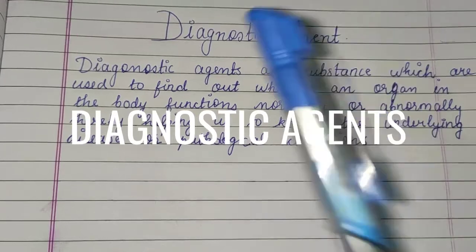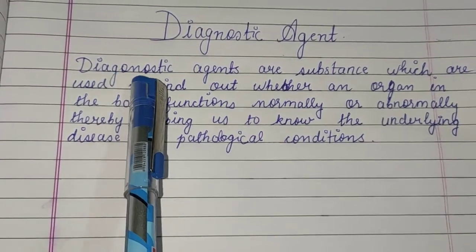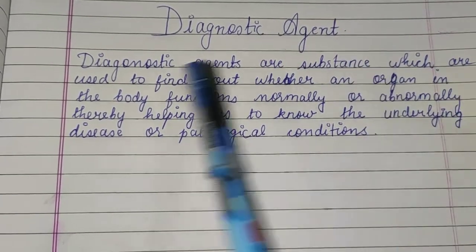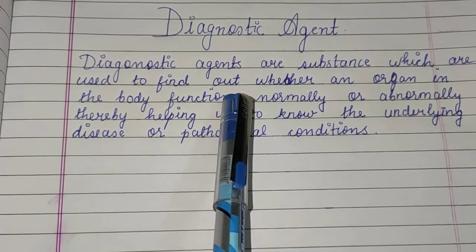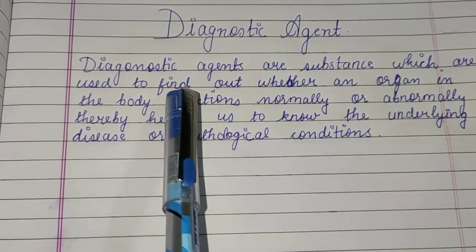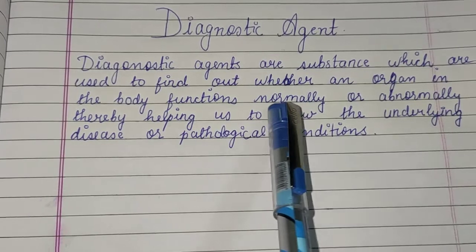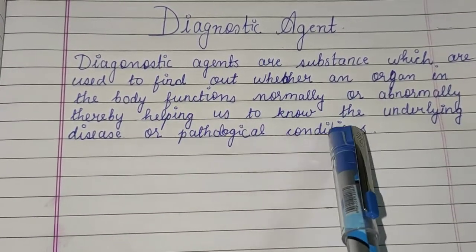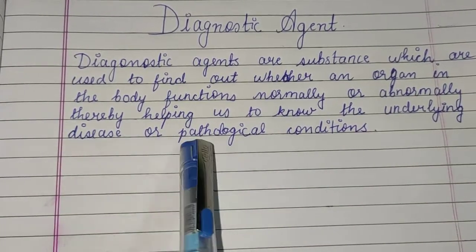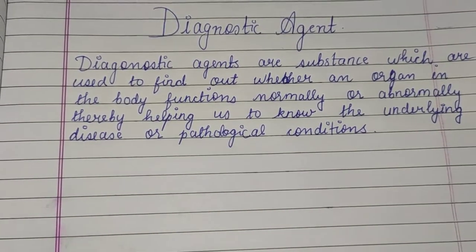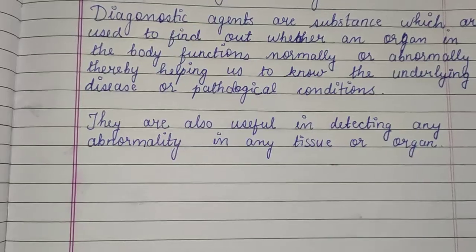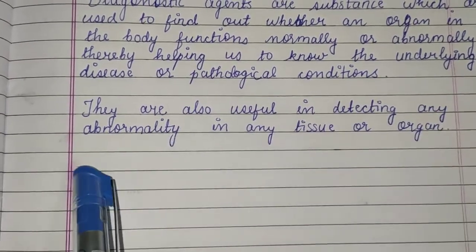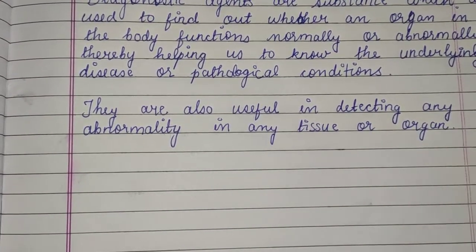Hi guys, welcome to my channel. Diagnostic agents are the substances which are used to find out whether an organ in the body functions normally or abnormally, thereby helping us to know the underlying disease or pathological conditions. Analysis means identification of illness. They are useful in detecting any abnormalities in any tissue or organ.